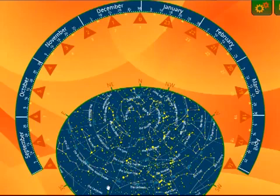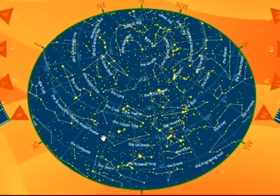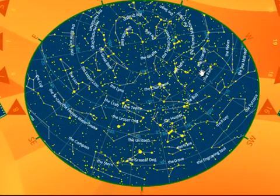All right, so this shows me, then, what my view of the sky would be. And this is particularly helpful if you want to find particular constellations. So let's just say you want to find, what's an interesting, let's say Orion.